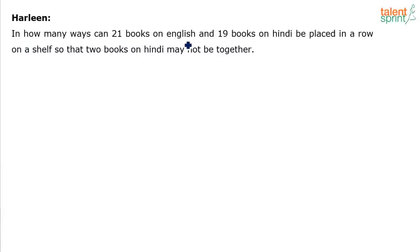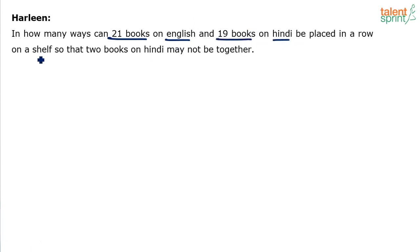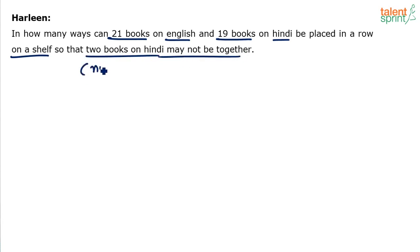In how many ways can 21 books on English and 19 books on Hindi be placed in a row on a shelf so that two books on Hindi may not be together? So this is a question from permutations and combinations. There are 21 English books and 19 Hindi books, and we need to place them in a shelf such that no two Hindi books are together.